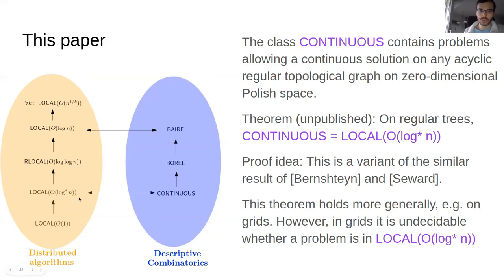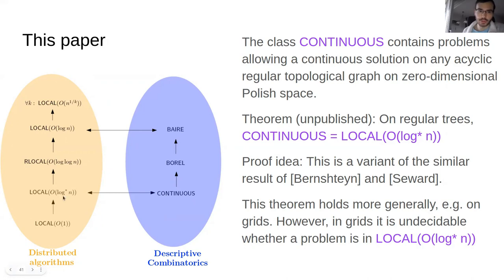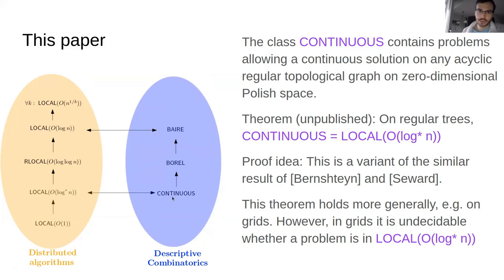One benefit of these equalities is that some results do not need to be proved separately in each field. For example, it was known both in distributed algorithms and in descriptive combinatorics that it is undecidable to determine whether a problem on grids is in this class or not — these were separate results. Now we know the two classes are the same, so we only need one proof. This simplifies the picture considerably.